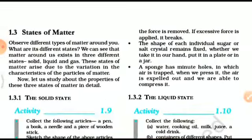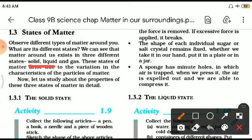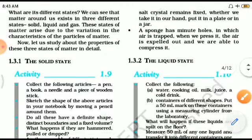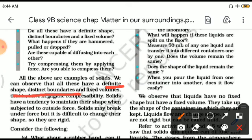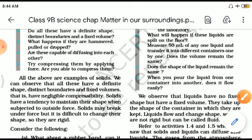Matter exists in various states. In your course there are three states, but scientists have recently come across two more, making five total. For now, the three states are solid, liquid, and gaseous. The solid state has a definite shape, distinct boundaries, and fixed volume. Solids have negligible compressibility and a tendency to maintain their shape.